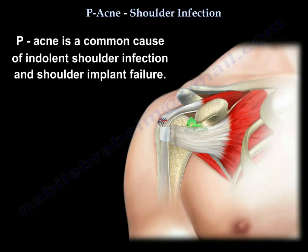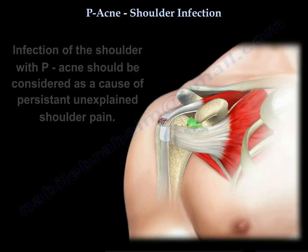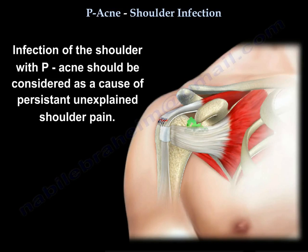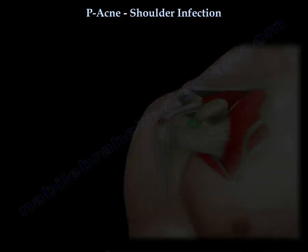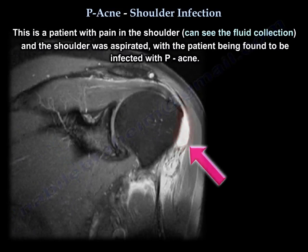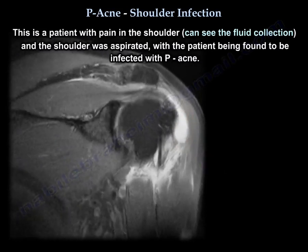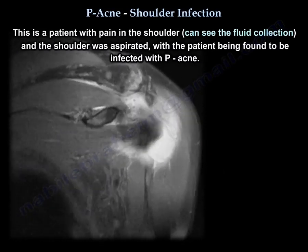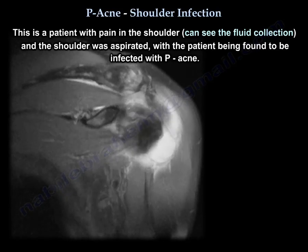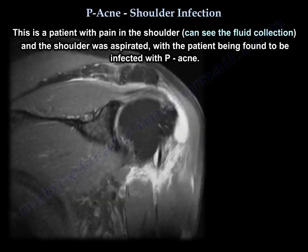If you suspect infection, ask the lab to hold the culture for at least two weeks. Men have a higher bacterial burden than women. P. acnes is the most common cause of indolent shoulder infection and shoulder implant failure. Infection with P. acnes should be considered as a cause of persistent unexplained shoulder pain. A case example showed fluid collection that was aspirated and found to be infected with P. acnes.